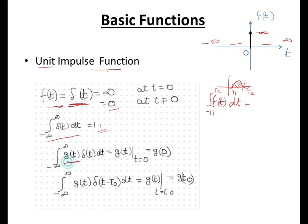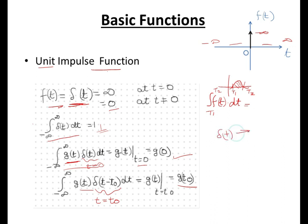Another property of δ(t) is: if we integrate the impulse function with any other function g(t), then since δ(t) is defined only at t = 0, the value of the integration equals g(t) at t = 0, which is g(0). Similarly, if the impulse is at t = t₀, its value would be g(t₀). Also, the Laplace transform of the impulse function is 1.